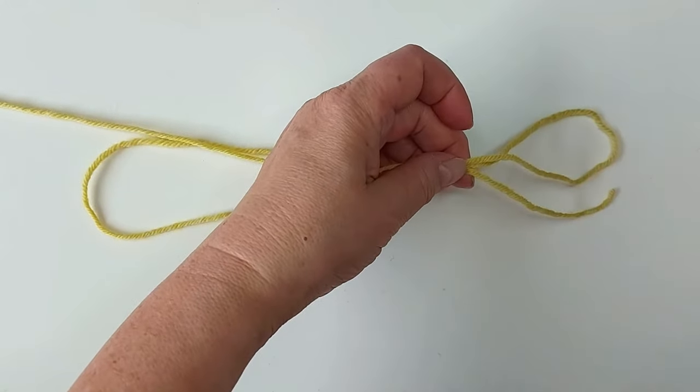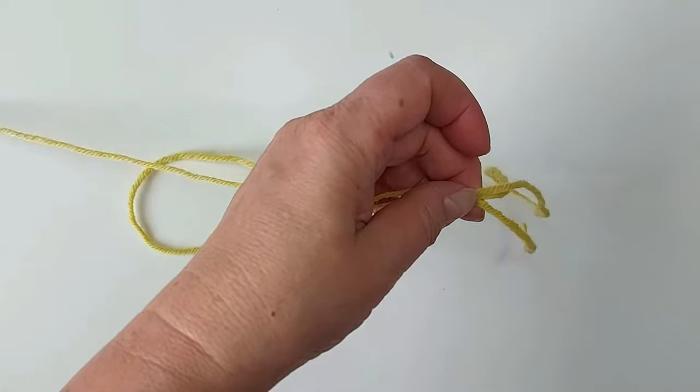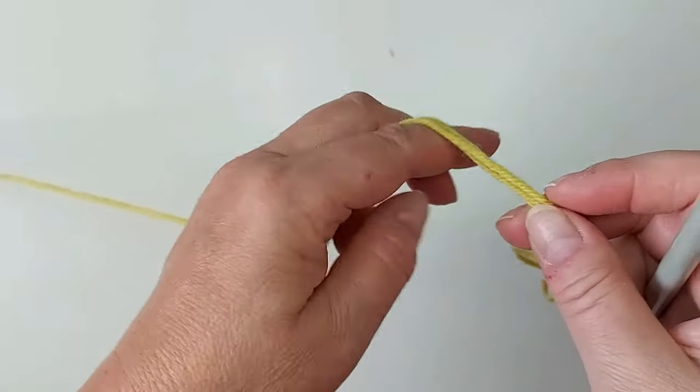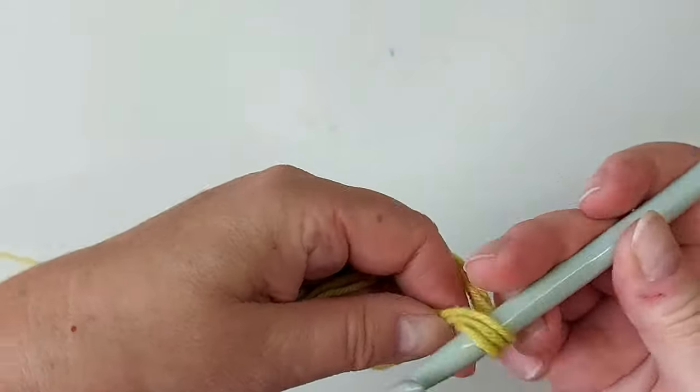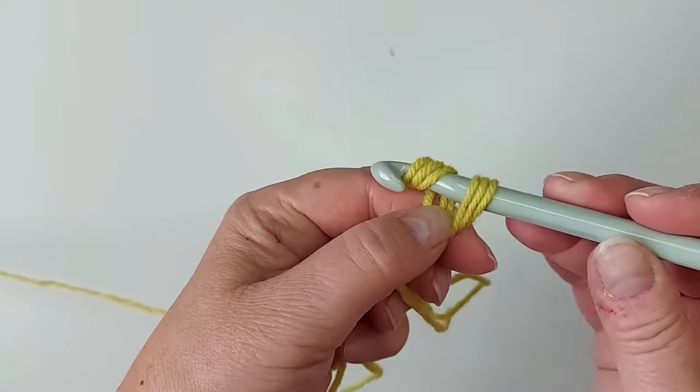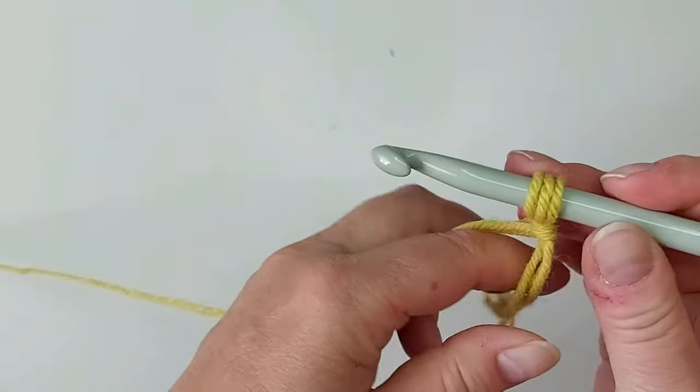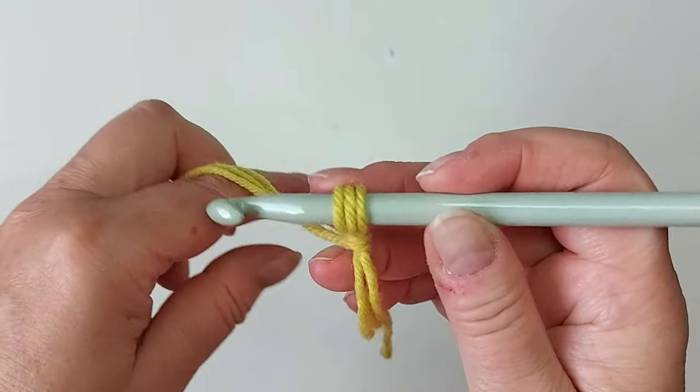Take hold of all three and then make a slip knot as if this was just one yarn. So just make a slip knot whichever way you make it and then you start to crochet.